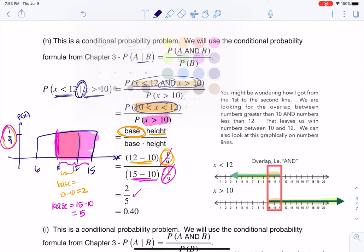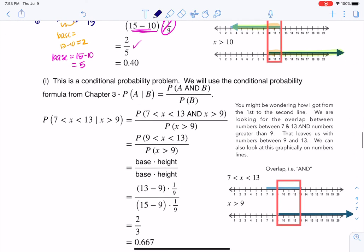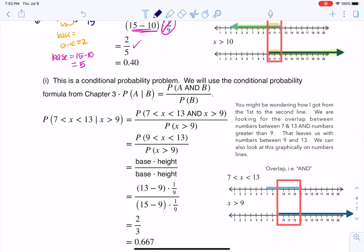And then the same thing is about to play out for part I, and it's got an uglier looking condition, I'm not going to deny that, but it's the same idea. So we say, if you know that you lose at least 9 pounds, what's the likelihood you lost between 7 and 13 pounds? So here I am looking for the overlap. Here's X greater than 9, here's X between 7 and 13, and you can see that they overlap between 9 and 13, and that is what my numerator turns into.